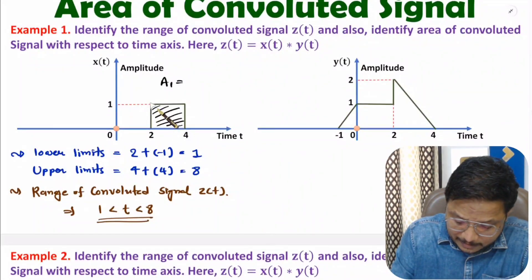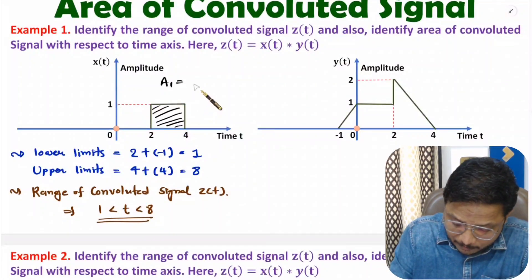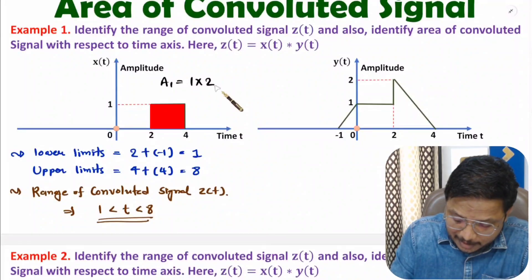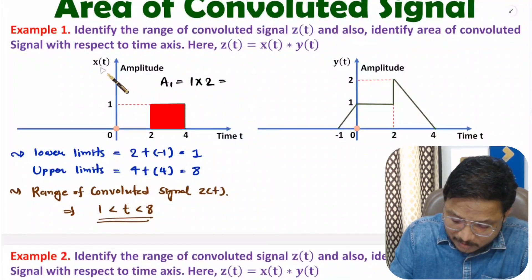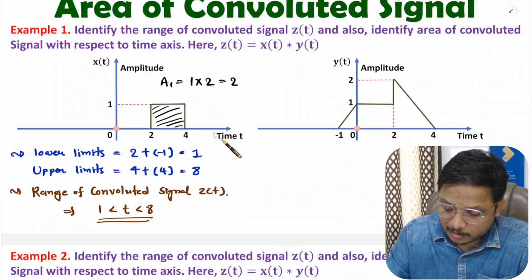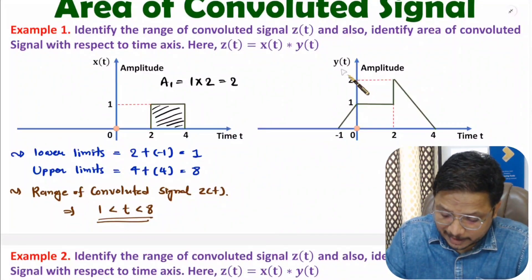The area of the rectangle is base times height. Here height is 1 and base is 2 seconds. So the area covered by X(t), that is A1, equals 2.